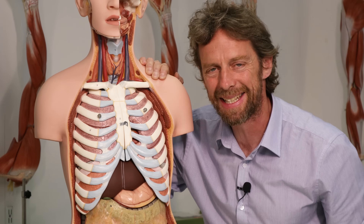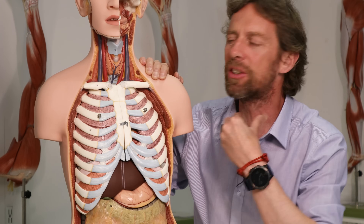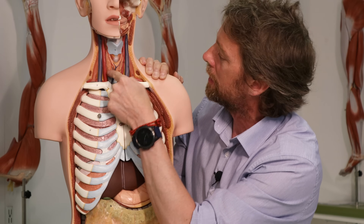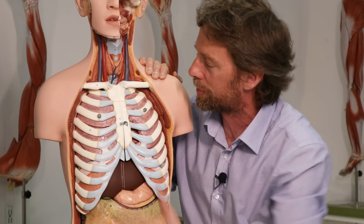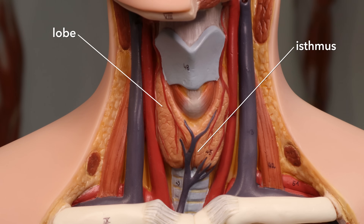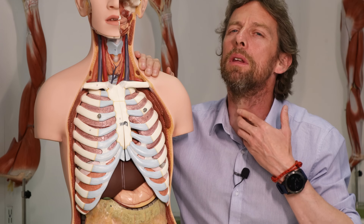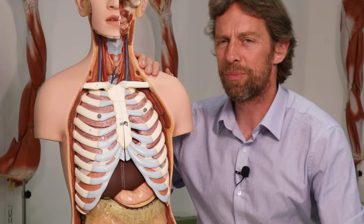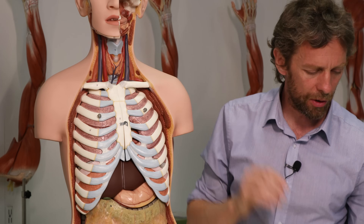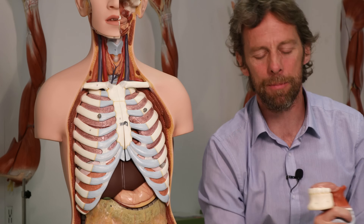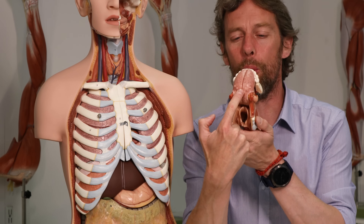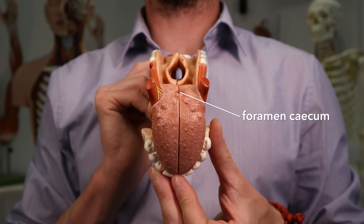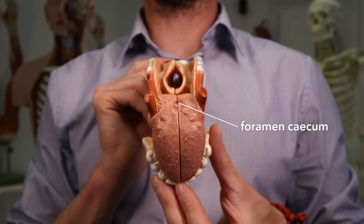The two lobes of the thyroid gland are a little lateral to the trachea and the cricoid cartilage, and then we have this central isthmus - the joining bit linking the two lobes together - which overlaps the cartilage rings of the trachea. The thyroid gland actually starts off in the tongue. In the embryo, the thyroid gland begins to form there, leaving a small depression in the posterior part of the tongue called the foramen cecum, and it descends to its final location.